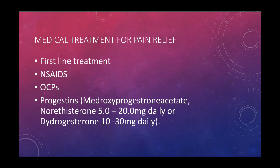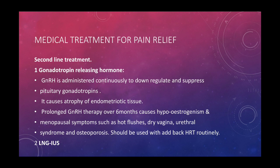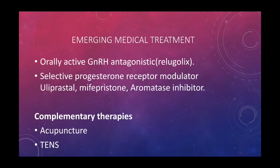Second-line medical treatment for pain relief is gonadotropin-releasing hormone (GnRH) agonists, administered continuously to down-regulate and suppress gonadotropins. They cause atrophy of endometriotic tissue. Prolonged GnRH therapy over six months causes hypoestrogenism and menopausal symptoms such as hot flushes, dry vagina, urethral syndrome, and osteoporosis, and should be used with add-back HRT routinely. Levonorgestrel intrauterine system is also an option.